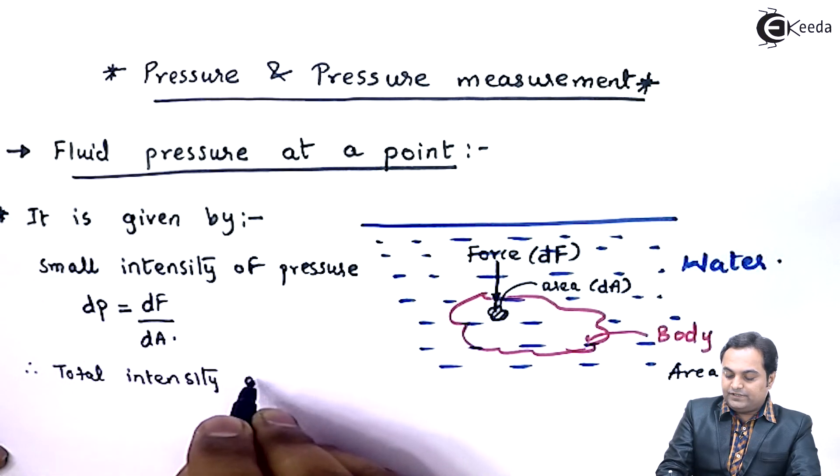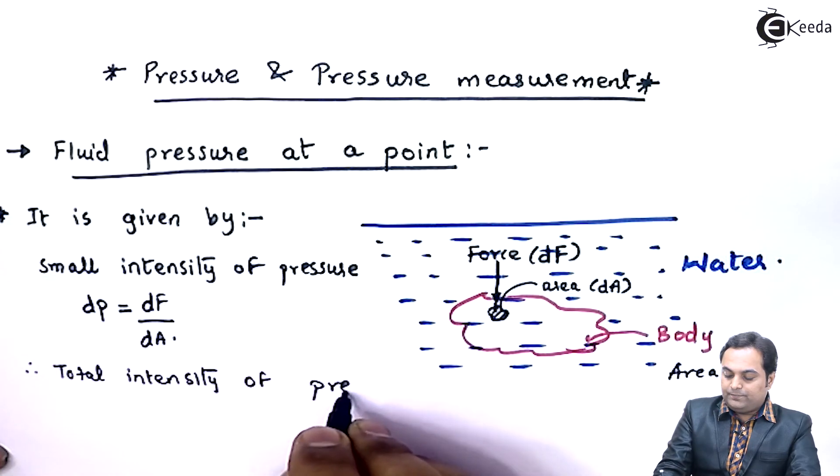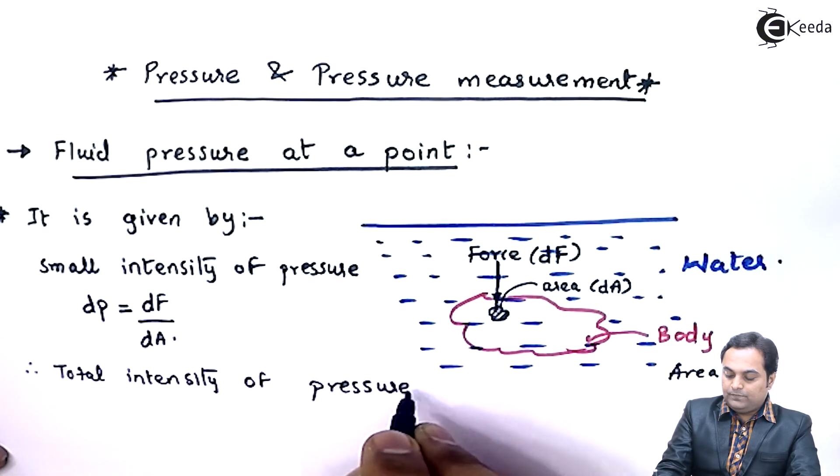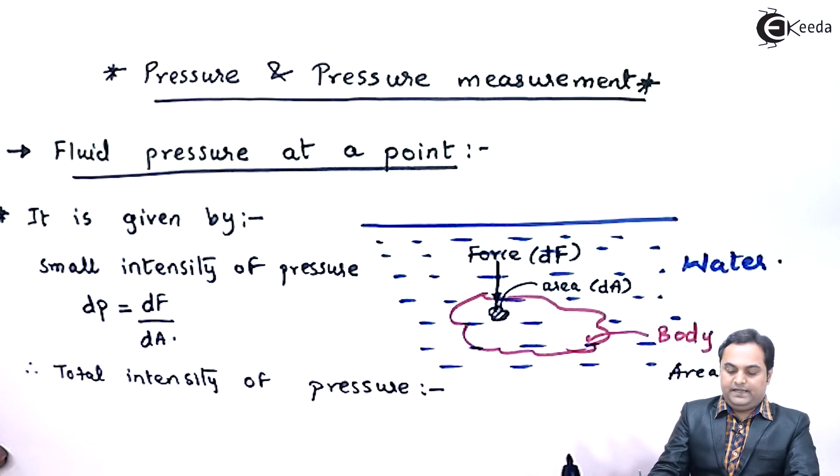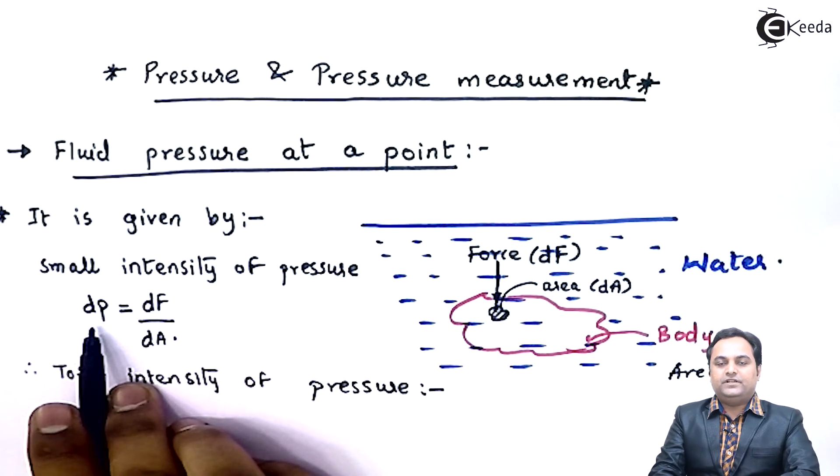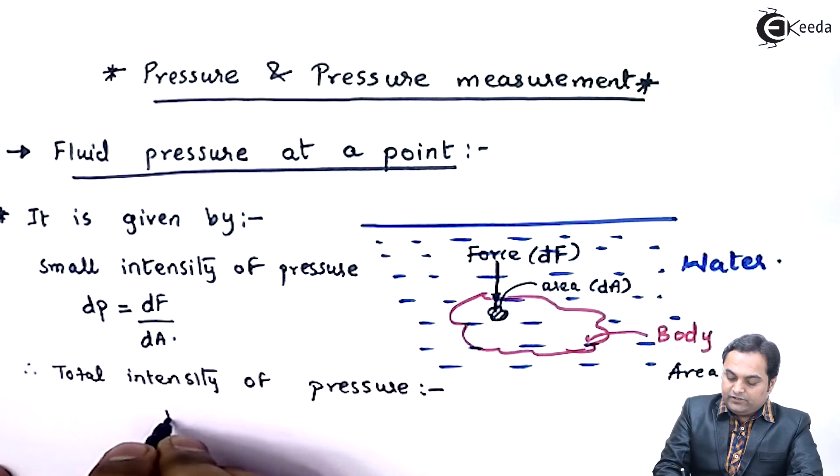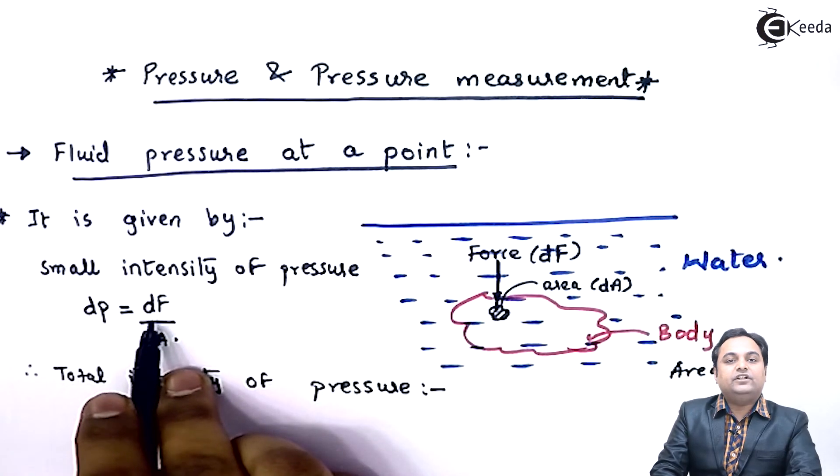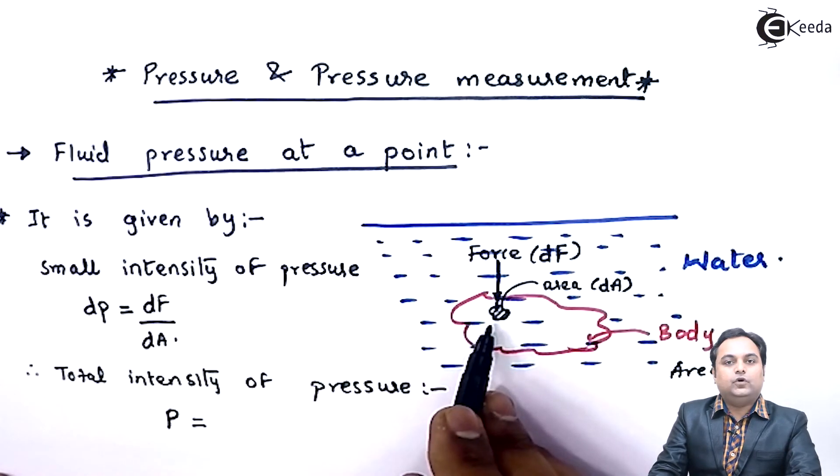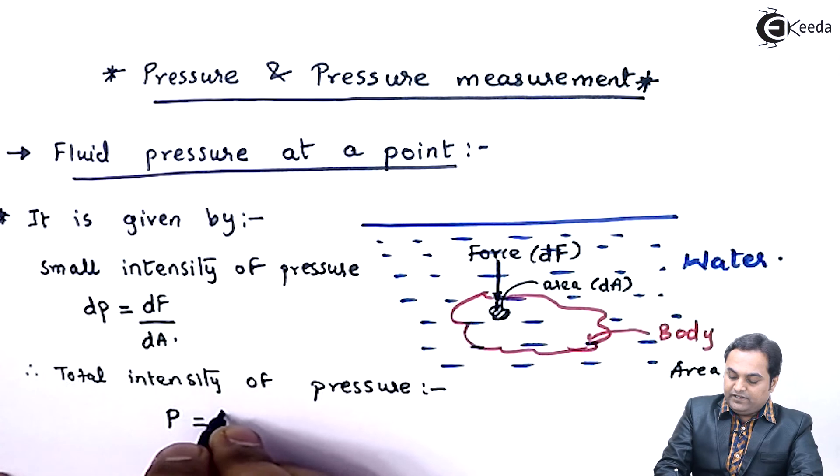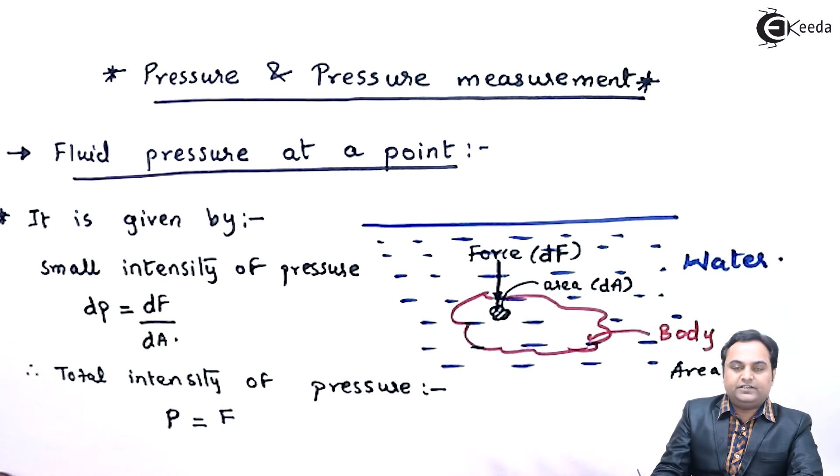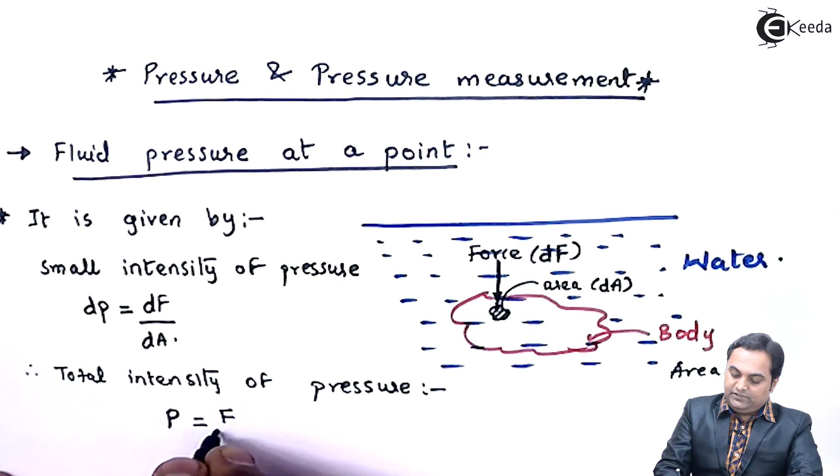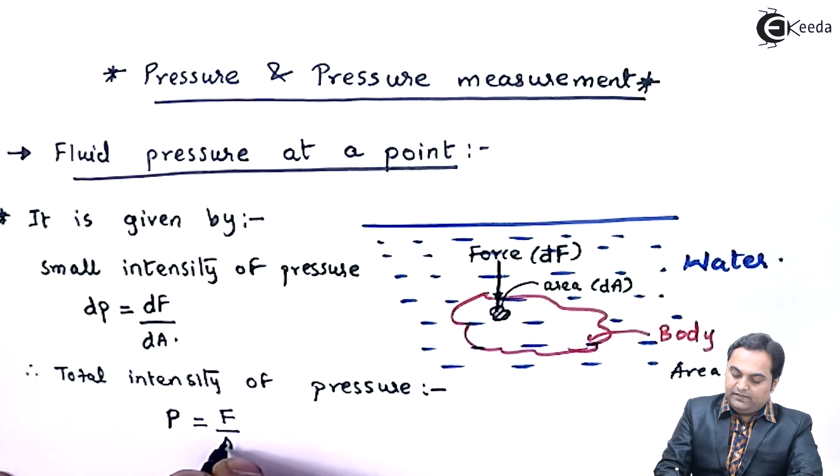Total intensity of pressure, that will be given by, instead of dp that is small pressure, here I would be having the total pressure. Instead of small force acting on small area, here I would be having a larger force acting on the total area, and that total area is denoted by letter A.